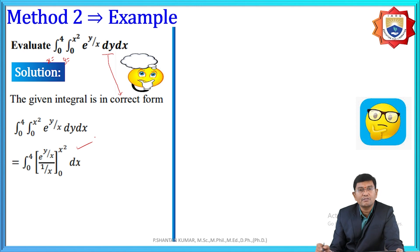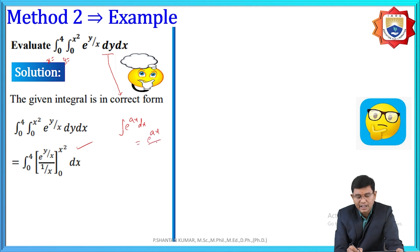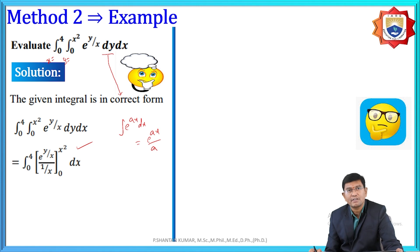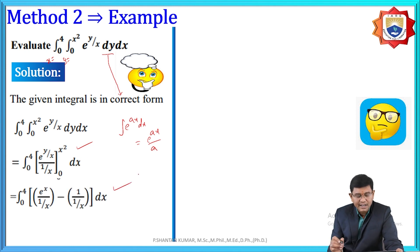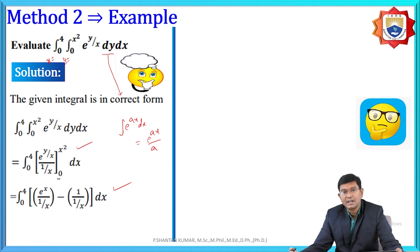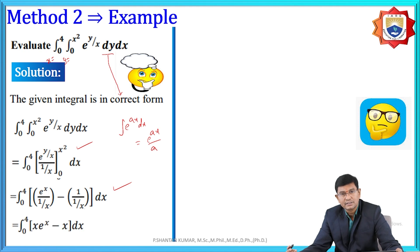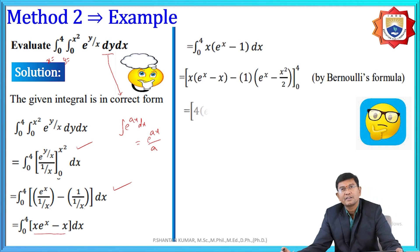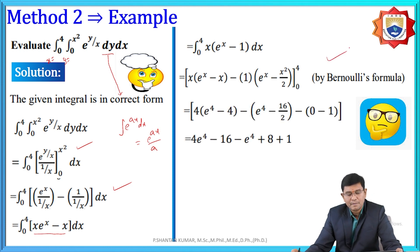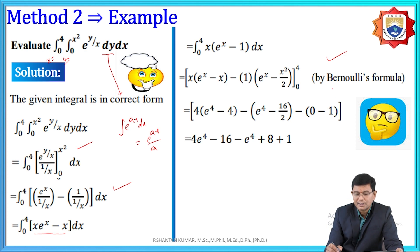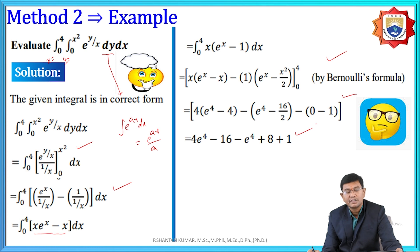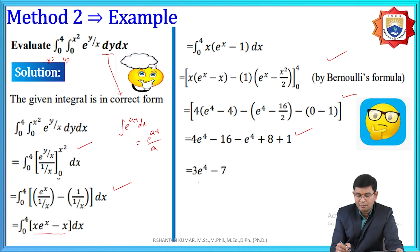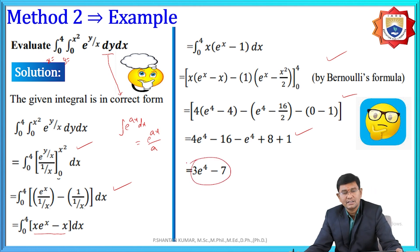For the integration of e^(y/x) with respect to y: using the formula ∫e^(ax) dx = e^(ax)/a, where a = 1/x, we get x·e^(y/x). After applying limits and integrating with respect to x using integration by parts (Bernoulli's formula), the final solution is 3e⁴ - 7.